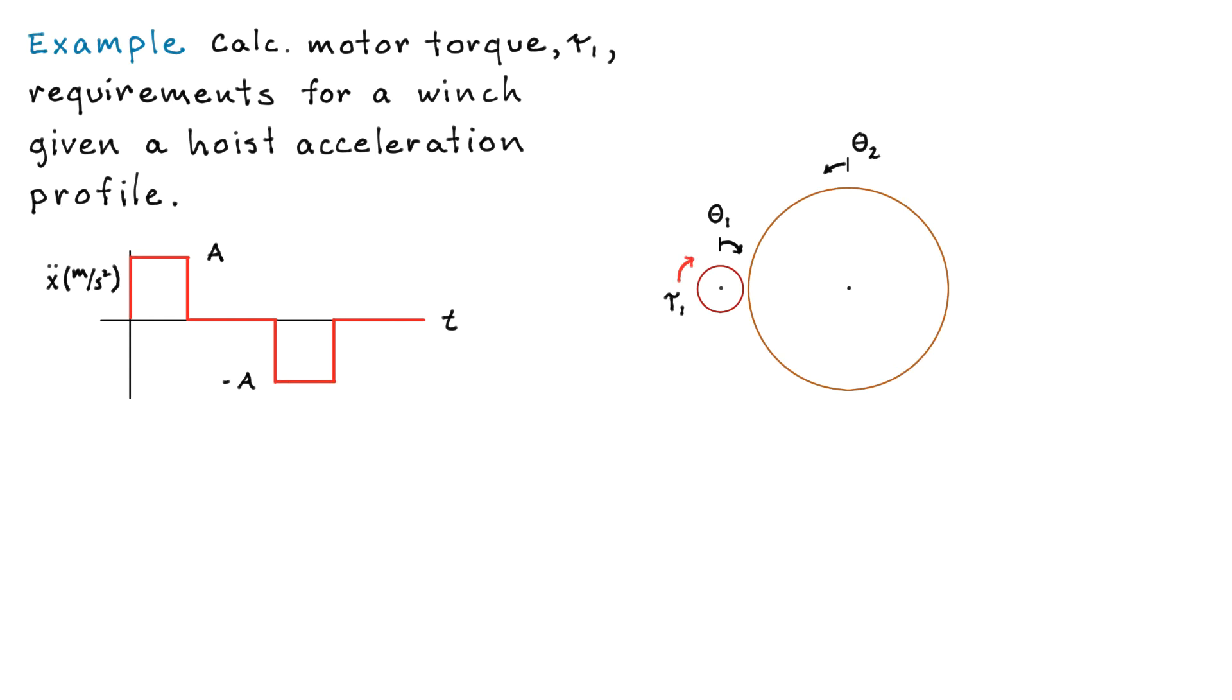Let's have a look at the system. Here's our gear train again. Nothing new there. But now what we're going to do is affix or fasten that green drum to the output gear, the brown gear, gear 2.